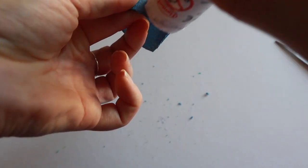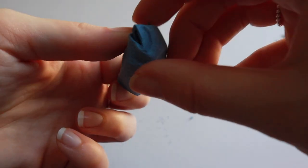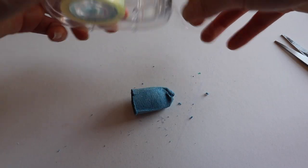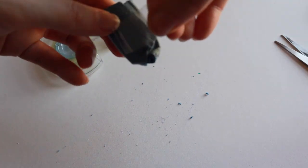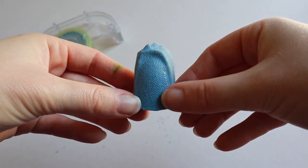Put glue along one of the long edges, then curve the egg box around to stick it to the other side. Make sure you leave a small hole in the top, as this is where the head will go. It should look like a thumb. Use sellotape to make it extra secure whilst the glue dries. Now we have a body.